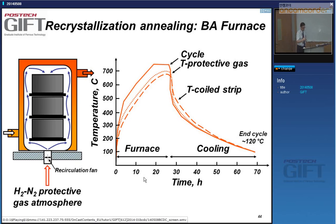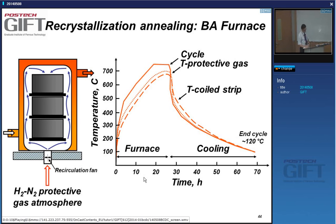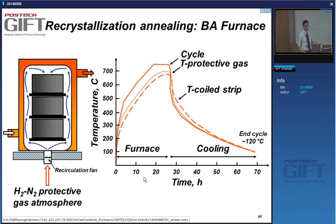Picking up where we left off last week, namely with the annealing. Just to remind you, after cold rolling, your material is cold deformed — it's very hard and can't really be used in most applications, so you need to recrystallize it. When you do the recrystallization, you have two options: batch annealing, or you can do it via continuous annealing.